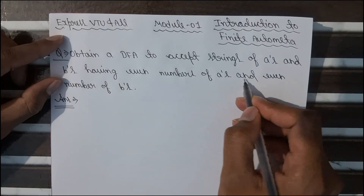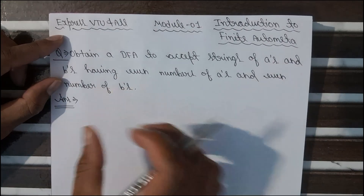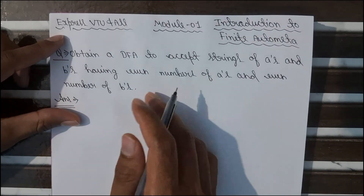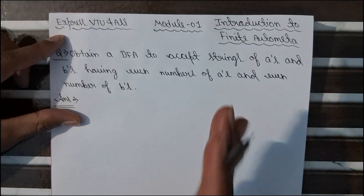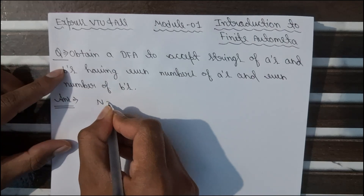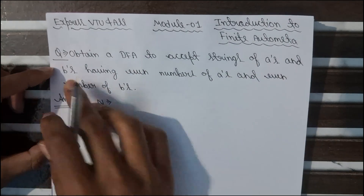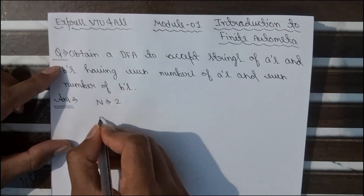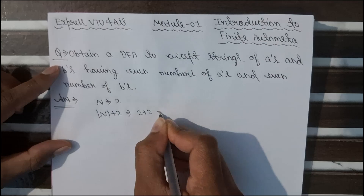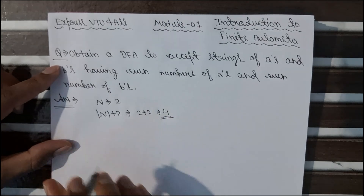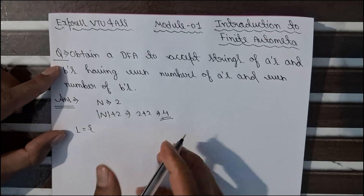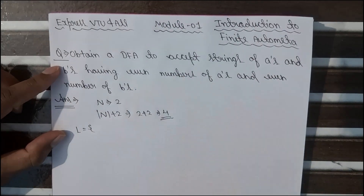It is clearly mentioned that AND means both conditions should be accepted by our DFA — even number of A's and even number of B's. First, we will find the number of states required to make a DFA diagram. The total number of symbols N equals 2 (A and B), so total number of states equals N plus 2, which means 2 plus 2 equals 4. Four states will be required to draw the DFA.